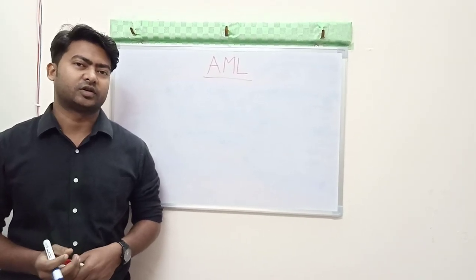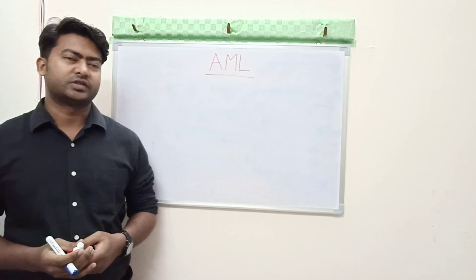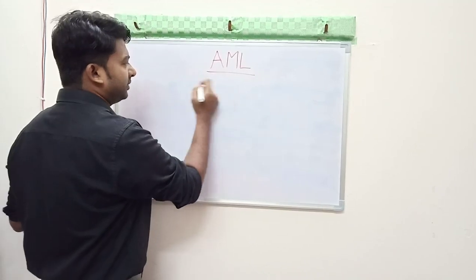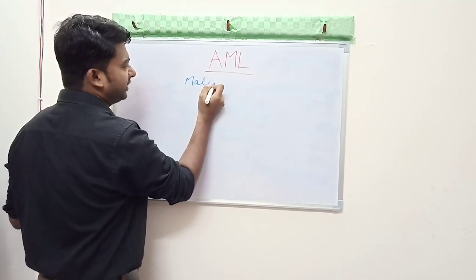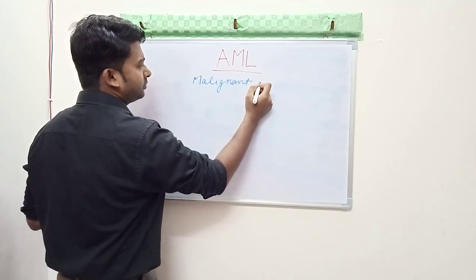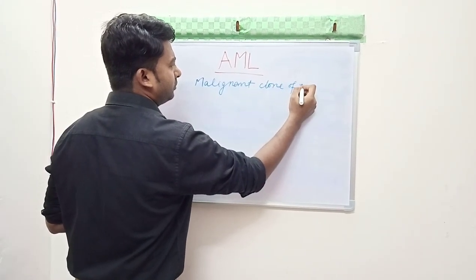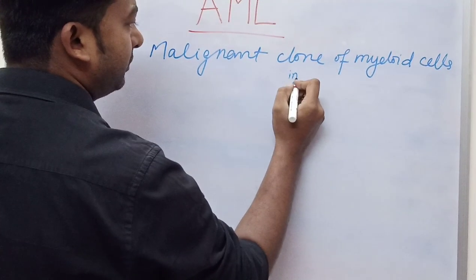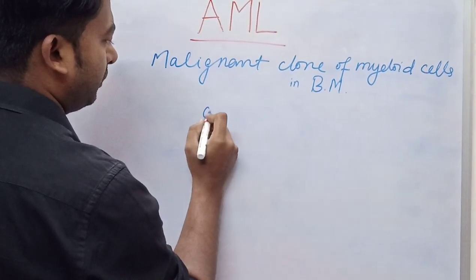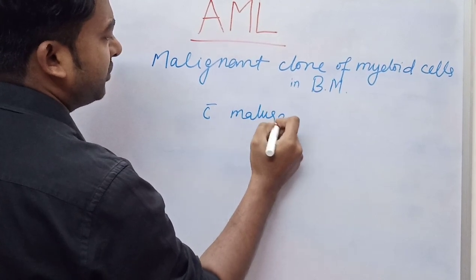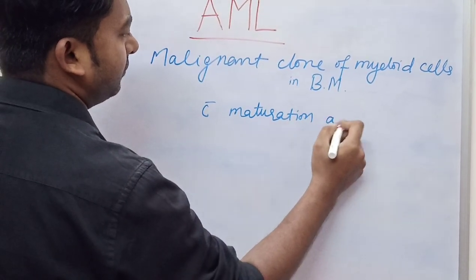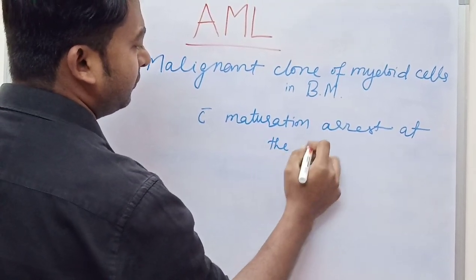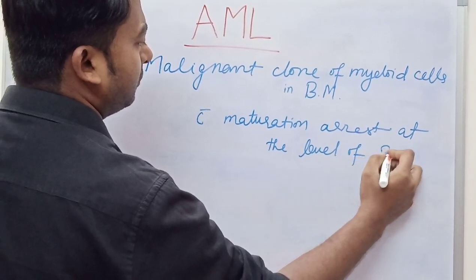Hello friends, welcome to Pathological Concepts. Today we are going to learn the concept of Acute Myeloid Leukemia, that is AML. AML is a malignant clone of myeloid cells in the bone marrow, with maturation arrest at the level of blast.